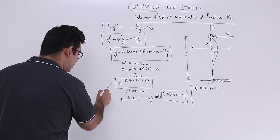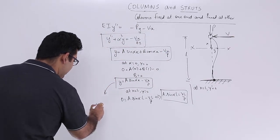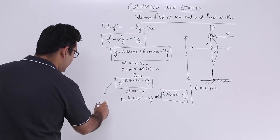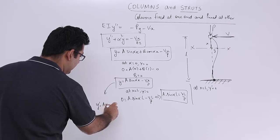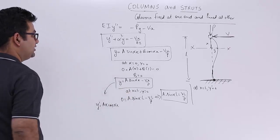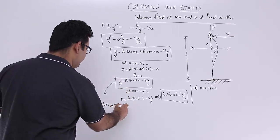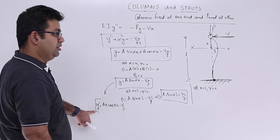So y dash can be found out from this equation. You will have y dash is equal to a into alpha cos alpha x minus v by p. So this is 0.